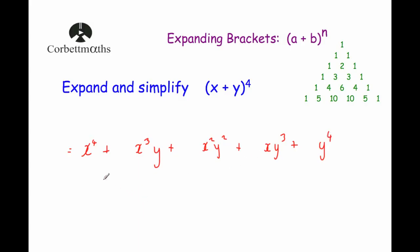We need to figure out the coefficients. We have 5 terms, so we want the row of Pascal's triangle with 5 numbers: 1, 4, 6, 4, 1. The first coefficient is 1 so we don't need to write it — giving x to the power of 4 plus 4x cubed y plus 6x squared y squared plus 4xy cubed plus y to the power of 4.